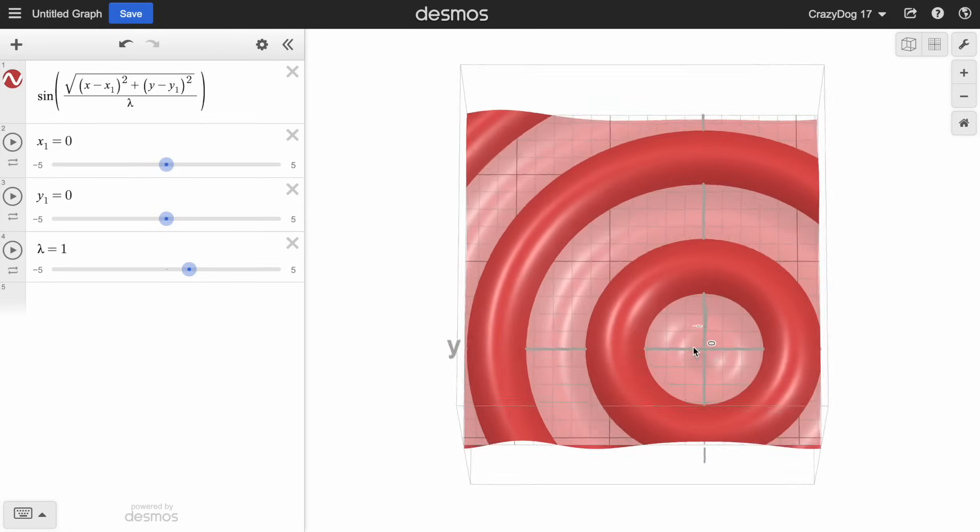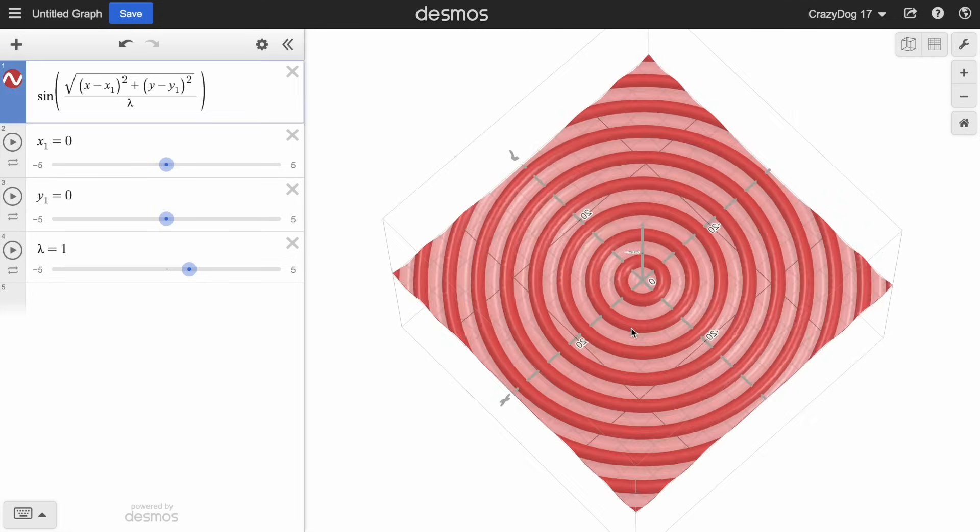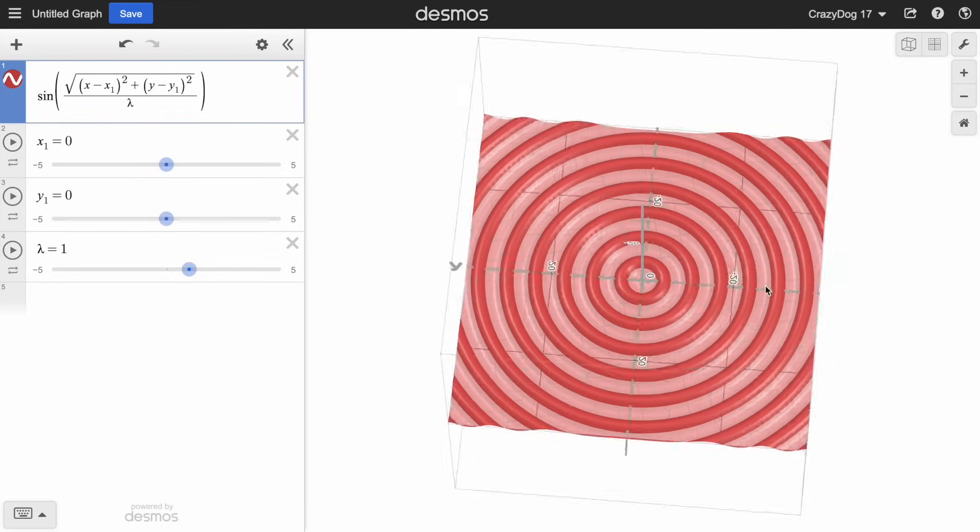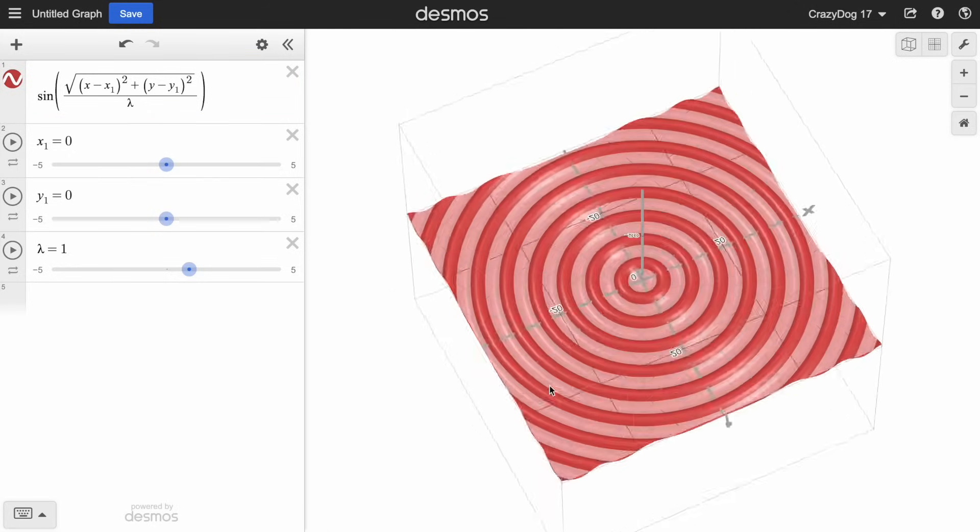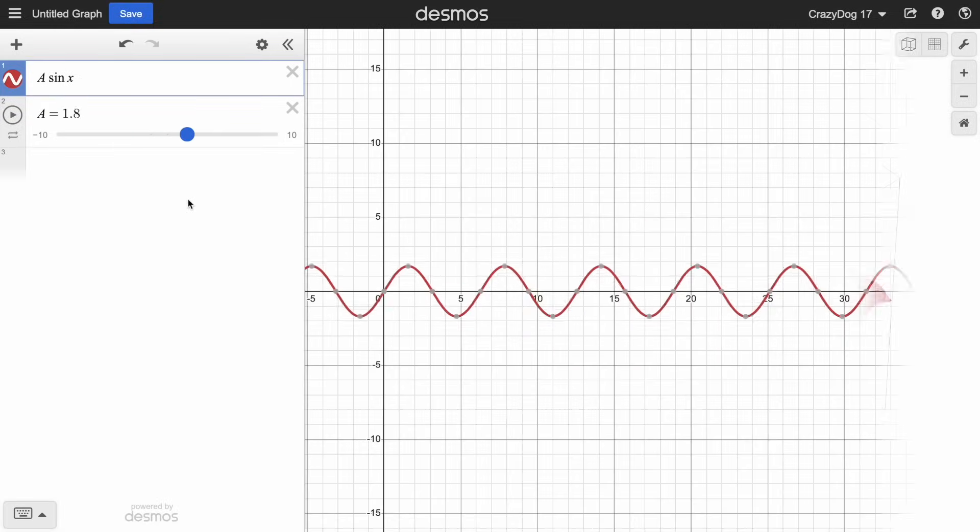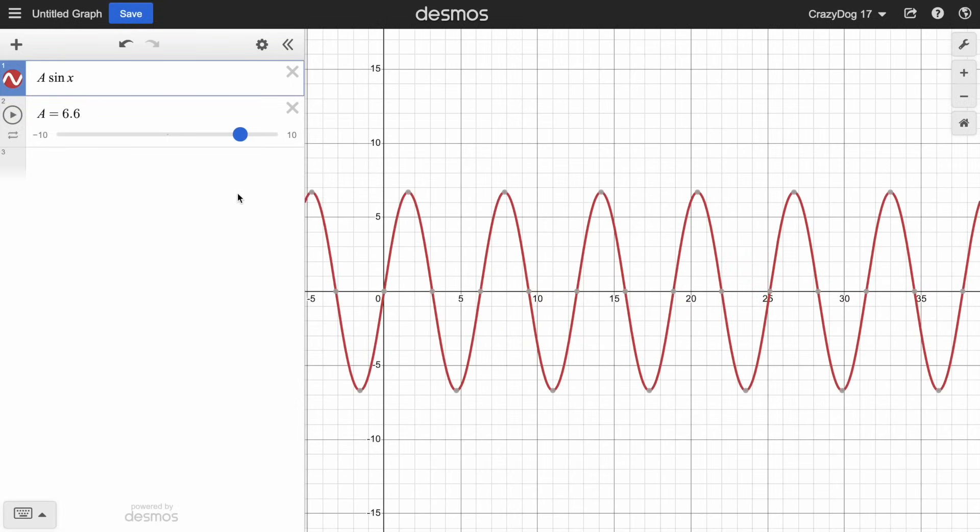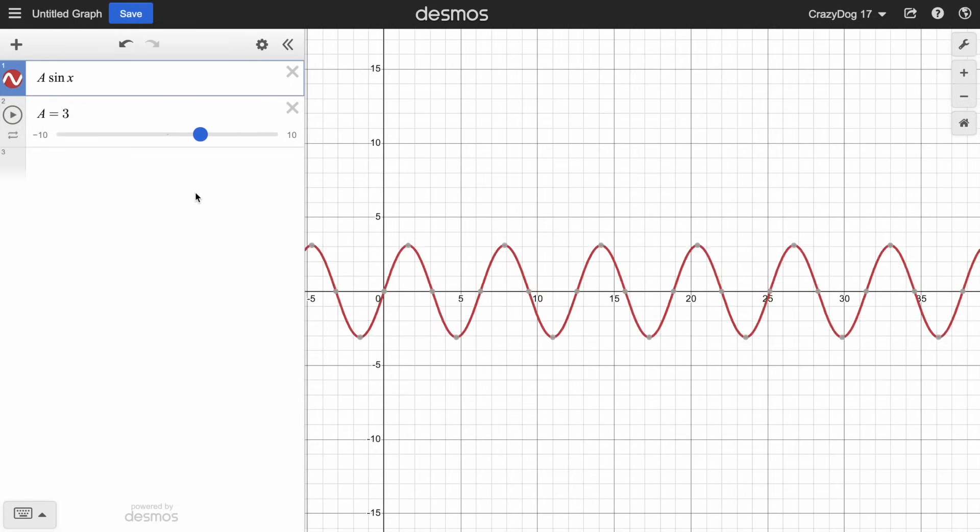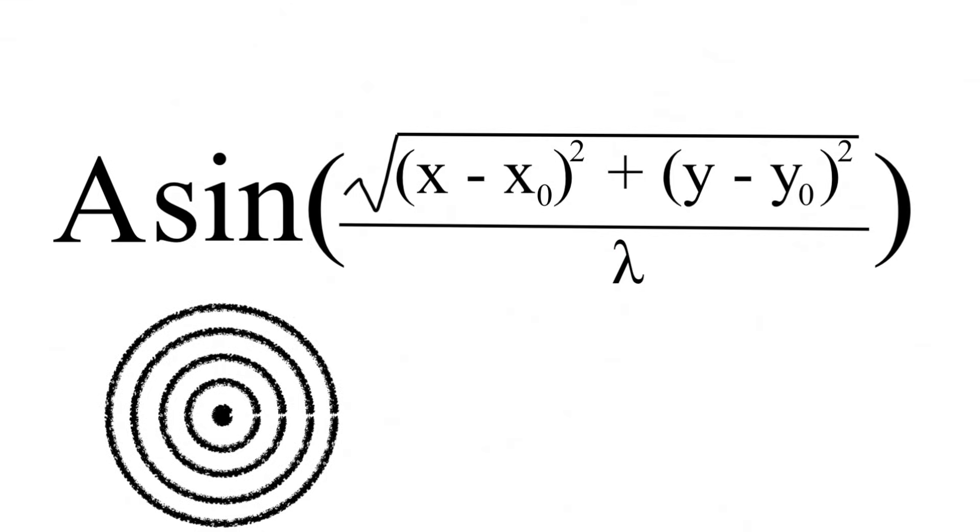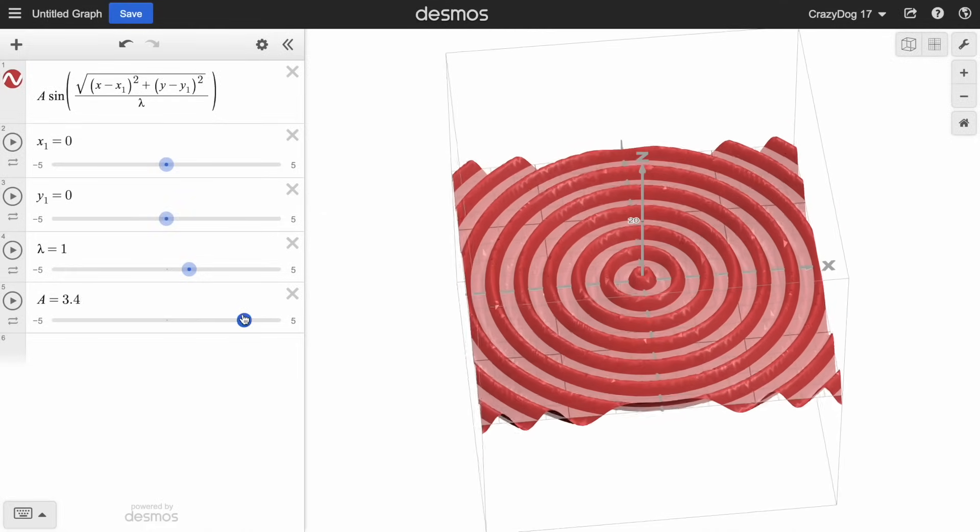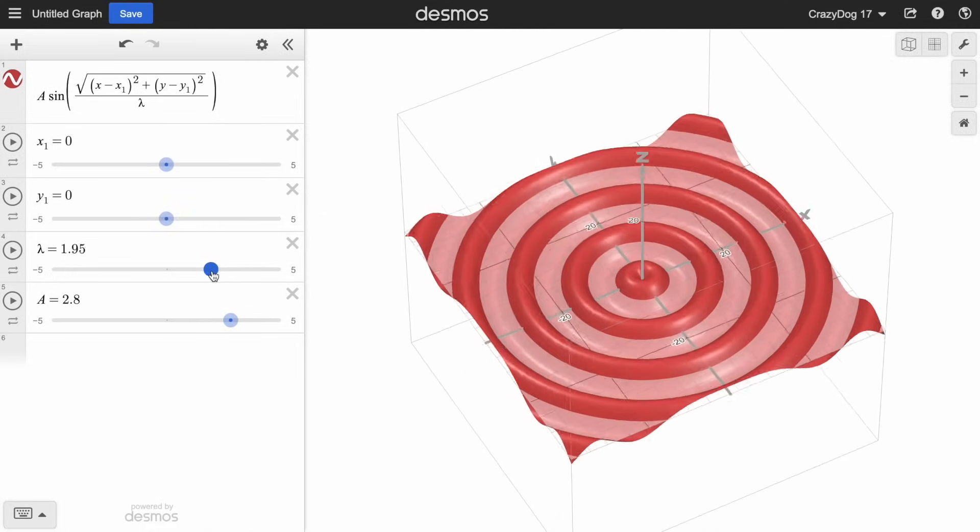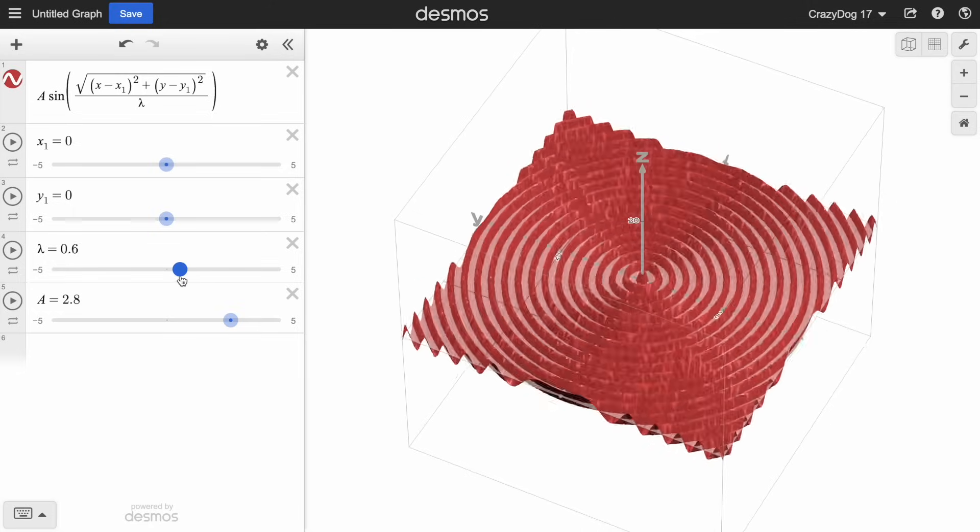Side note, if sine isn't your favorite function, I don't know what you're doing with your life. Sine should be your favorite function ever. Anyways, just like with a single variable sine function, multiplying it by some constant A out front will change the intensity of your wave, the amplitude. And so, just like that, we now have the ability to change the steepness of our wave, the wavelength of our wave, and its position.